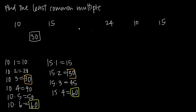Now what happens when you have a set of numbers that includes more than just two numbers? Maybe it's going to be really difficult to write out all of the multiples of each number until you find one that matches across all three sets. Here we need to find the least common multiple of 24, 10, and 15. So how do we do that?